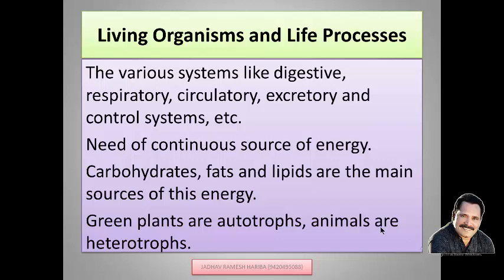Green plants, which we call autotrophs, produce their own food by the process of photosynthesis, with the help of sunlight, chlorophyll pigment, and carbon dioxide. Animals, which we call heterotrophs, depend on other plants and animals for their food, and so they are called heterotrophs.